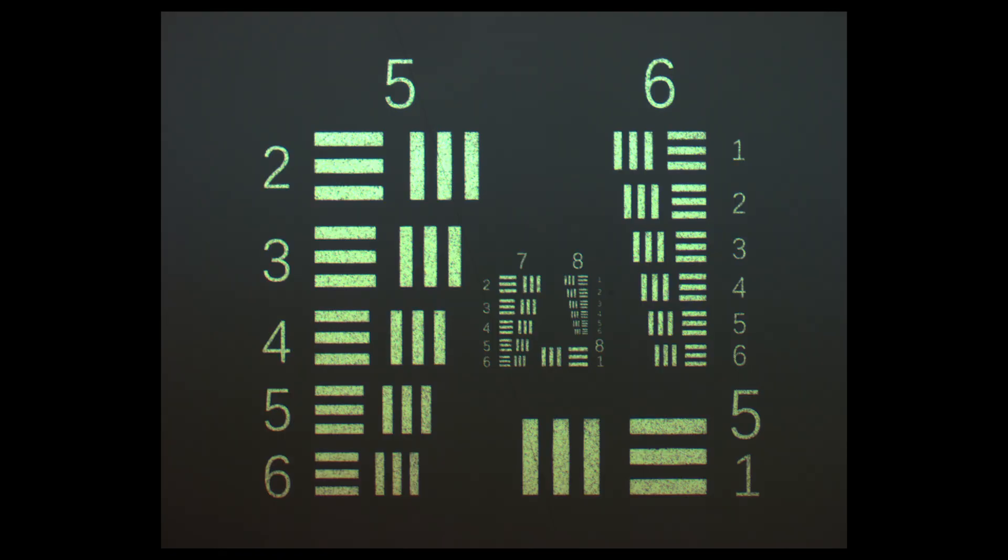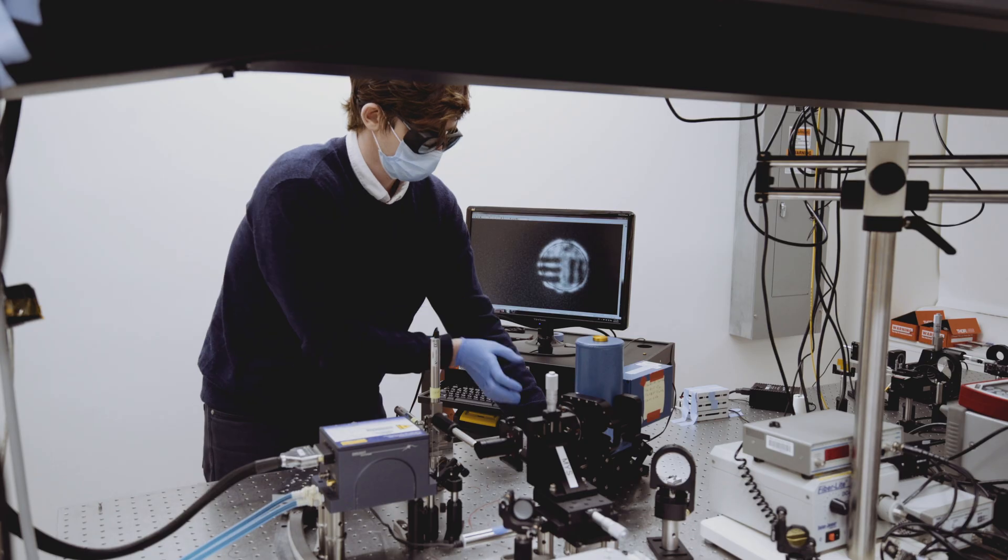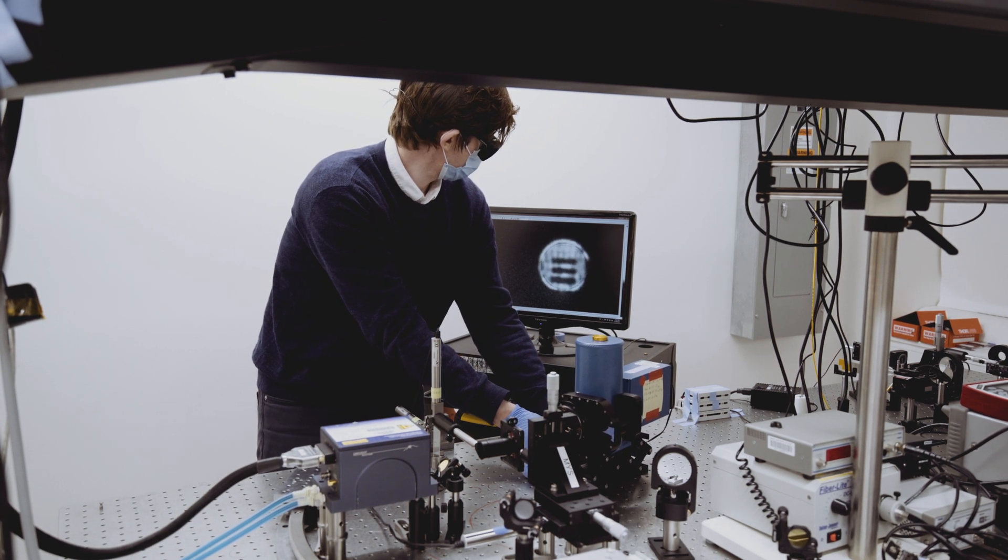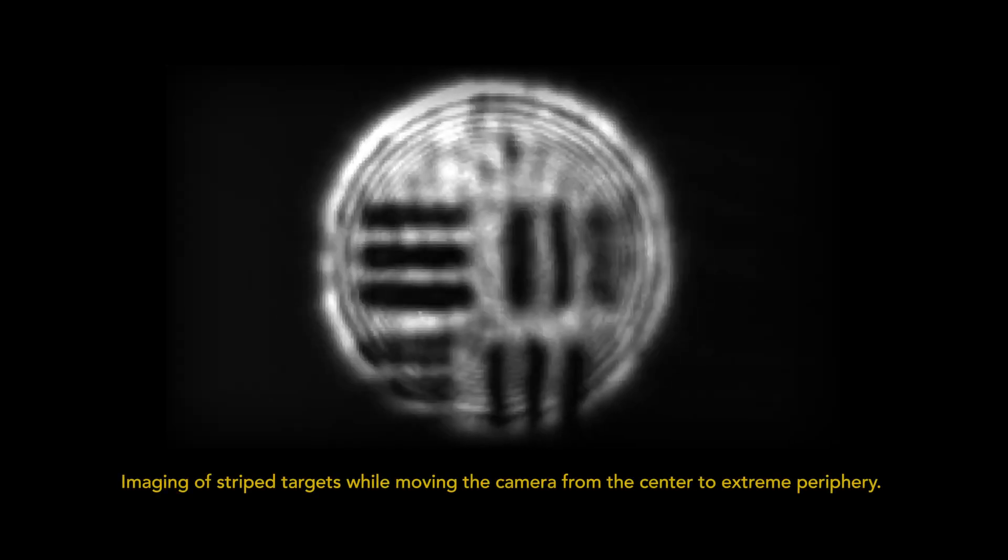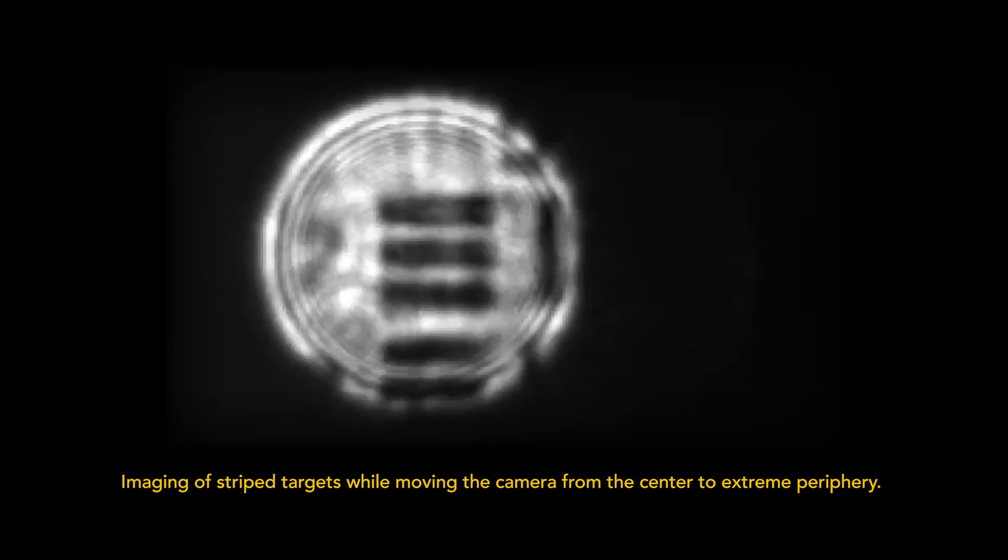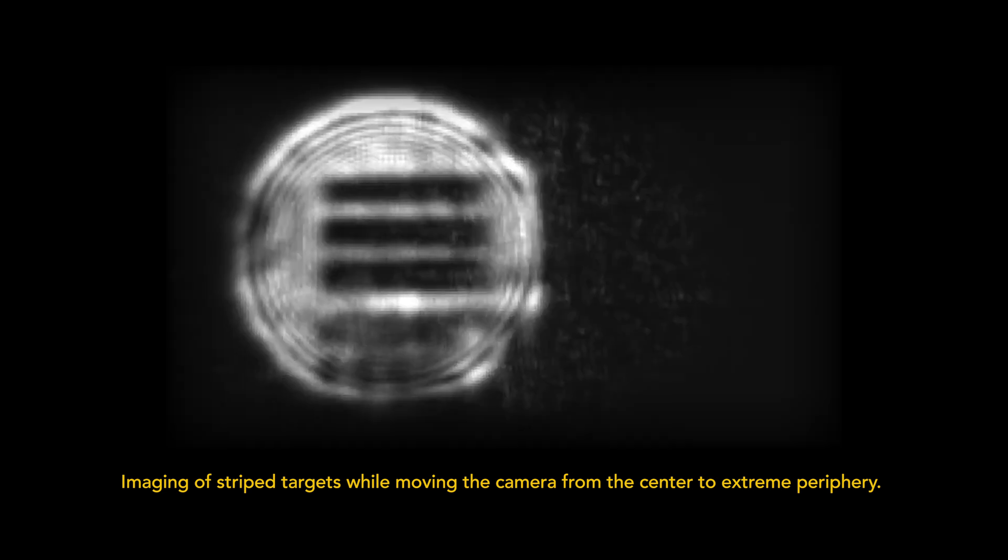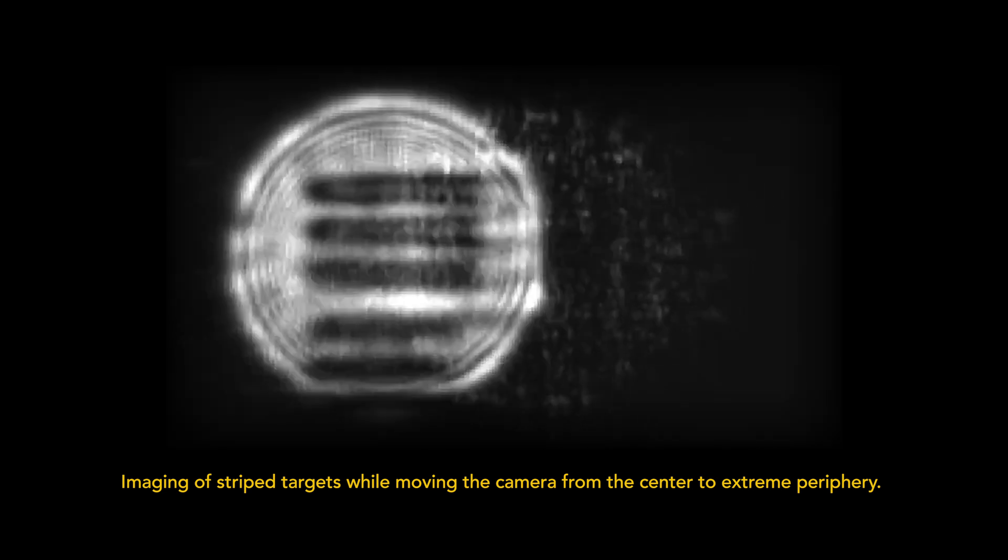In their lab demonstration, the team used the imaging setup equipped with the meta-lens to snap pictures of a striped target. They then compared the quality of pictures taken at various angles across the scene, and found the new lens produced images of stripes that were crisp and clear, even at the edges of the camera's view, spanning nearly 180 degrees.